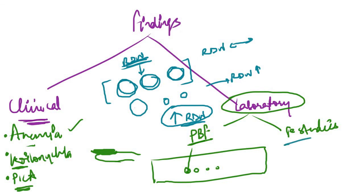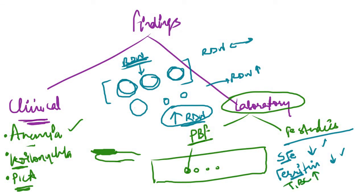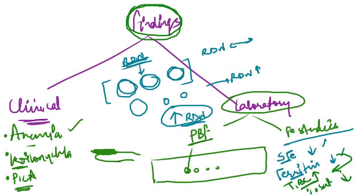In the iron studies: serum iron will be decreased — that is why it is called iron deficiency anemia. Ferritin will also be decreased, because once serum iron has decreased, the only source of iron is stored ferritin, which gets utilized. Total iron binding capacity (TIBC) will be increased, because as ferritin goes down, TIBC goes up — the inverse relationship. Lastly, percentage saturation will be decreased, because iron concentration has decreased while transferrin molecules have increased, so fewer molecules are saturated with iron. That is all about iron deficiency anemia — I hope you liked this video. For more videos like this, do subscribe to my YouTube channel.